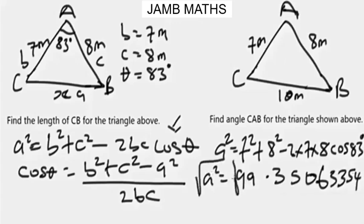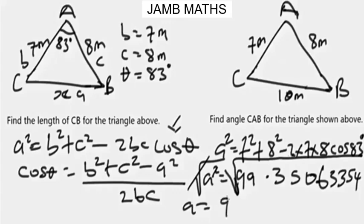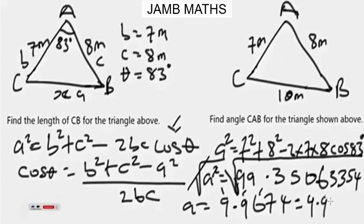When I put everything together, a² will be 99.35063354. To find a, we square root both sides, so the square cancels and a equals the square root of 99.35063354. Punching this into the calculator gives 9.9674. Rounding to three significant figures — since all non-zero digits are significant — our answer is 9.97 meters.